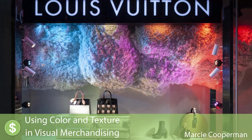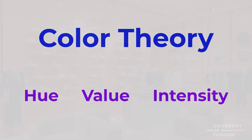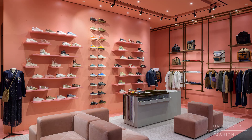In this lesson, we learn how color and texture are critical tools to use in visual merchandising. We begin by learning how to describe color using the concepts of color theory and the three elements of color: hue, value, and intensity. Those three elements are the way we describe colors.